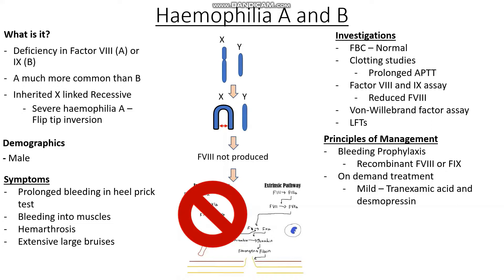We may also give desmopressin, a drug which helps to release some factor VIII from our endothelial cells. If the condition is severe and we have some severe bleeding, we may give a bolus of recombinant factor VIII or factor IX, based on which type of haemophilia the patient has.